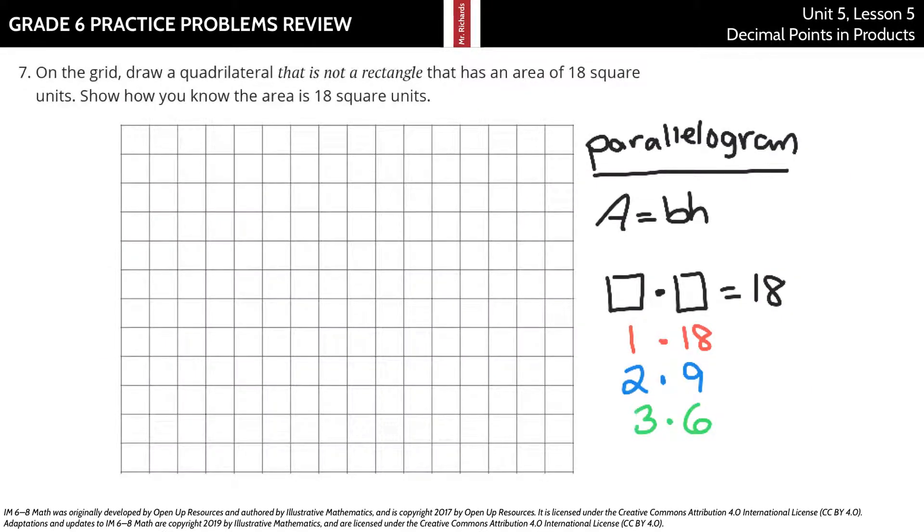And our last question, question seven. I haven't finished too much ahead of time yet, but a quadrilateral that's not a rectangle that has an area of eighteen square units, we can think of a parallelogram. Our formula for area of a parallelogram is area equals our base times our height. Remember, bases and heights have to meet at a right angle.